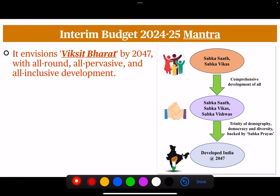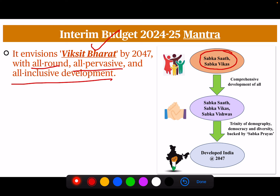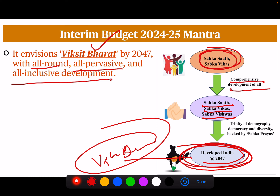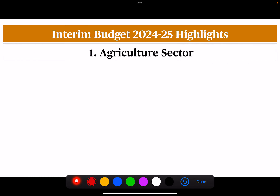The mantra of the Interim Budget 2024-2025 is Viksit Bharat by 2047, with all-round, all-pervasive and all-inclusive development — that is Sabka Saath and Sabka Vikas, Sabka Vishwas — developed India by 2047. Now we will analyze the budget sector-wise. First is the agriculture sector, which is the backbone of our country.